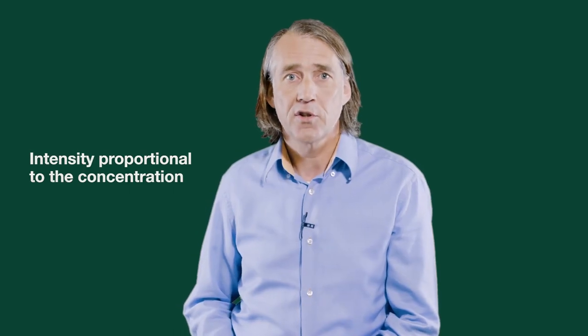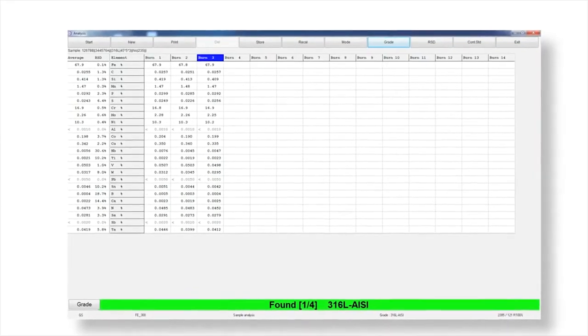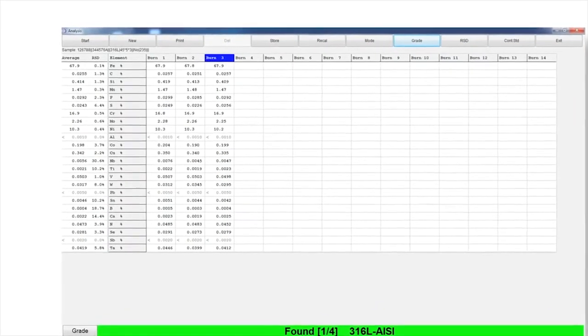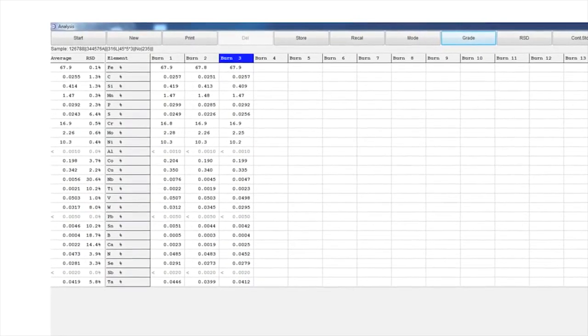The third component is the computer system. The computer system acquires the measured intensities and processes this data via a predefined calibration to produce elemental concentrations. The user interface ensures minimal operator intervention with results clearly displayed, which can be printed or stored for future reference.